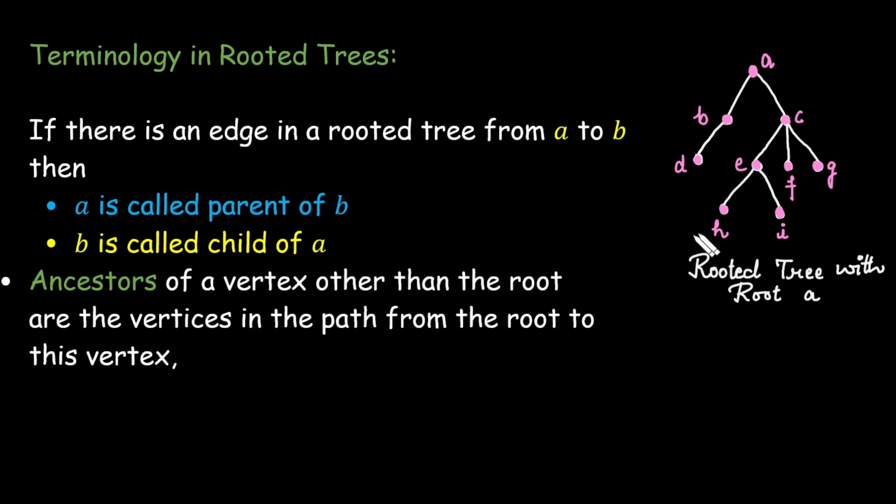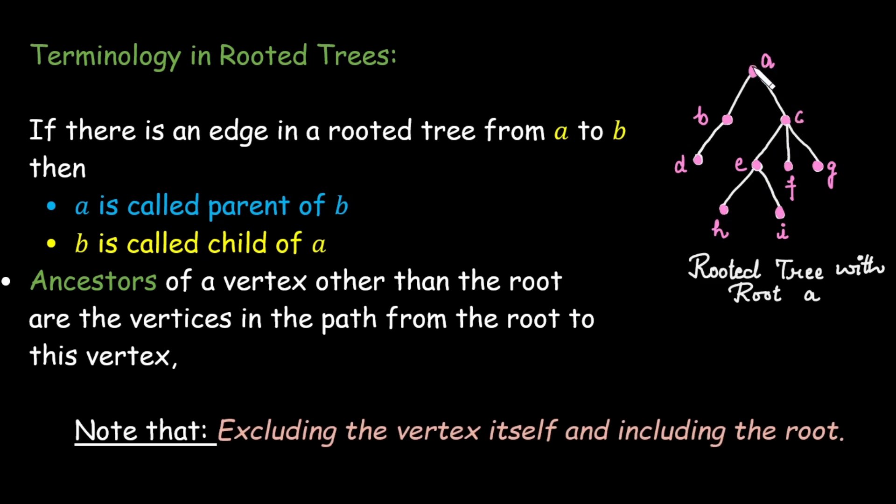So for example to find the ancestors of h, find the parent of h that is e, parent of e is c, and the parent of c is a. So the ancestors of h are e, c, and a.